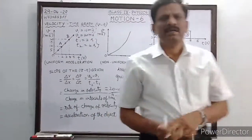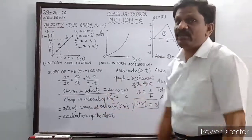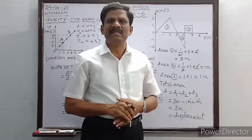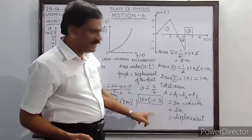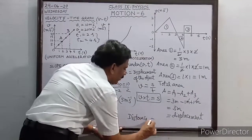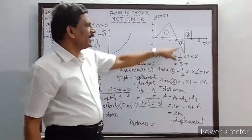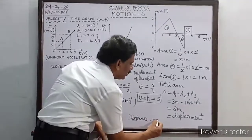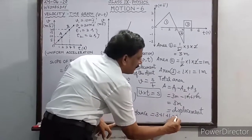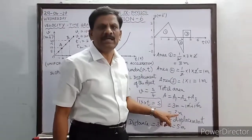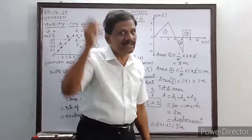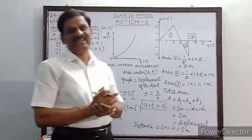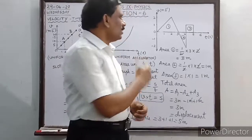Now, how do we find the distance travelled by the body from the same diagram? Distance is a scalar, so it can never be negative. Therefore, we add all three areas: 3 meters + 1 meter + 1 meter = 5 meters. So the distance travelled is 5 meters, while displacement is only 3 meters. This recalls the first lecture: distance is the actual length of the path, while displacement is the shortest distance between the initial and final points.